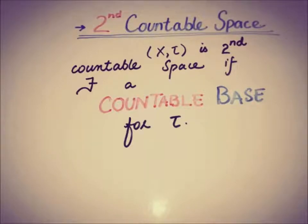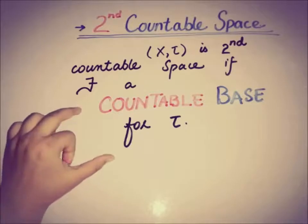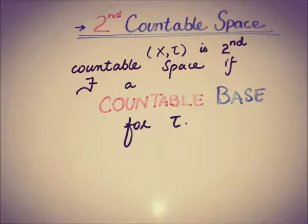requirement is a countable base. This is the second axiom of countability - that there is a countable base for τ. The first axiom of countability was discussed in first countable spaces, where for every x of the set X there must be a countable local base. So this is the second axiom of countability.